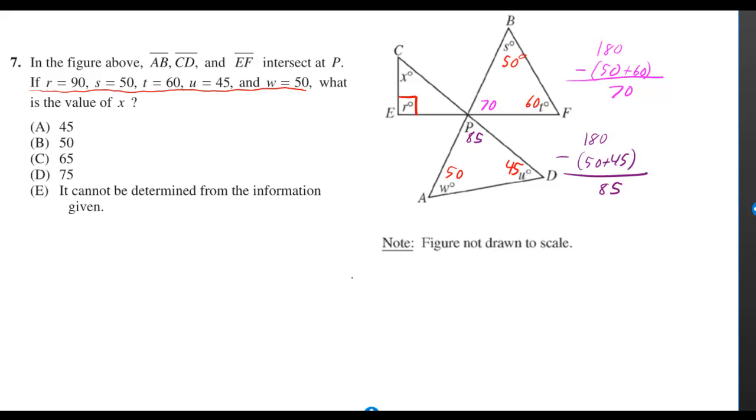In the figure above, AB, CD, and EF intersect at P. If r is equal to 90, s, t, u, and v are given, what is the value of x?